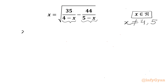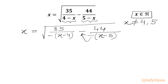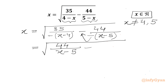Now I can write x equals square root of 35 over, factoring out the minus sign in brackets: (x minus 4), minus 44 over, factoring out minus, (x minus 5). The minus-minus becomes plus, so I can write plus term first: 44 over (x minus 5) minus 35 over (x minus 4).